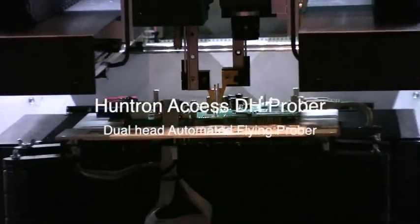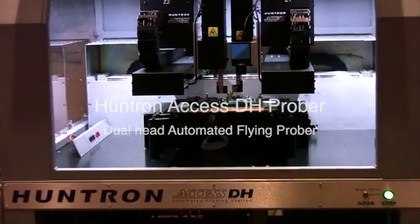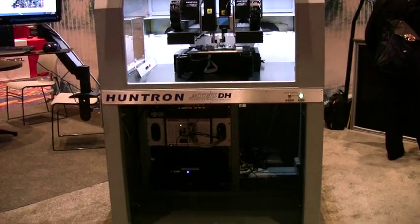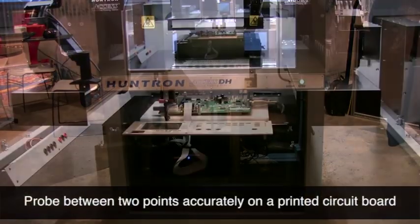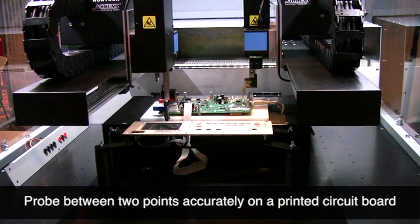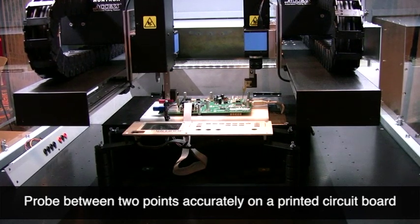The Huntron AXS DH Prober is a dual-head robotic platform for automating the process of testing electronic circuit boards. Utilizing dual-head flying probe technology, the AXS DH allows you to probe directly between two points on a printed circuit card.